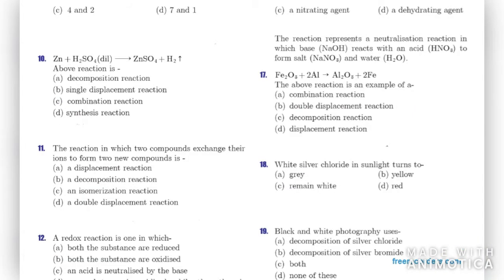Question ten: Zinc + H2SO4 gives zinc sulfate and H2. Which type of reaction is this? It is a single displacement reaction because we have a single element displacing another. So it is a single displacement reaction.